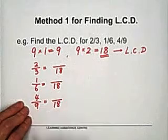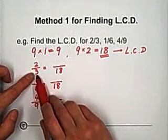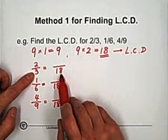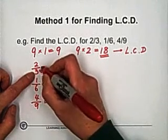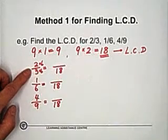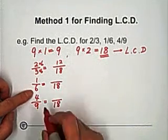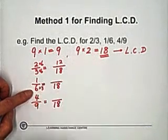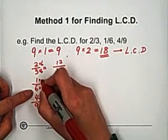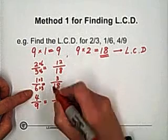To create equivalent fraction with denominator eighteen, you can check from three to eighteen, you need to multiply six. So multiply six, multiply six, you got twelve. One-sixth, from six to eighteen, you need to multiply three. So you also need to multiply three to the top, so we have three over eighteen.